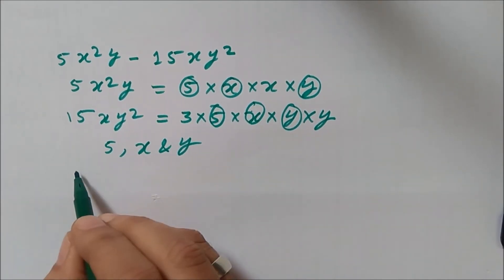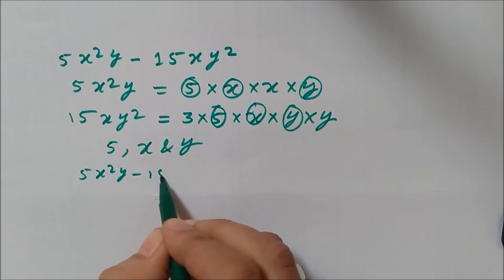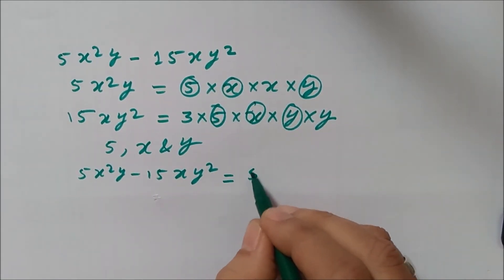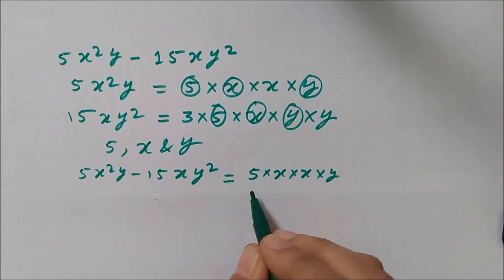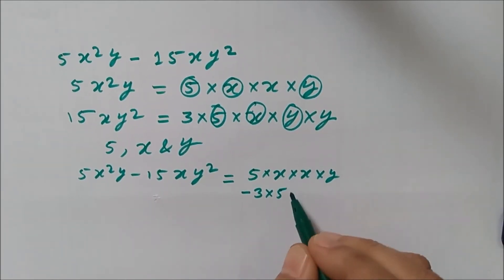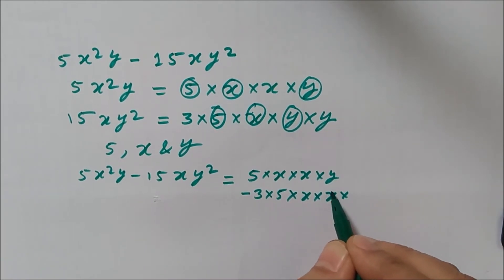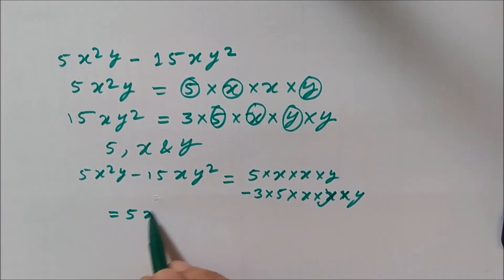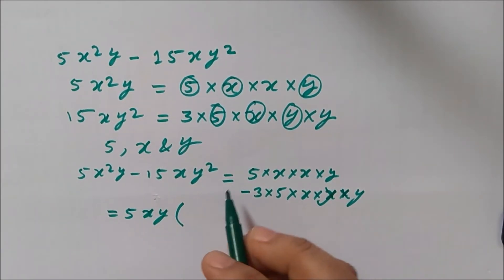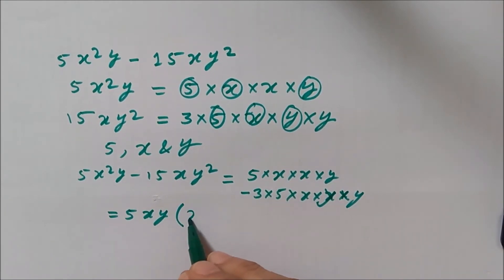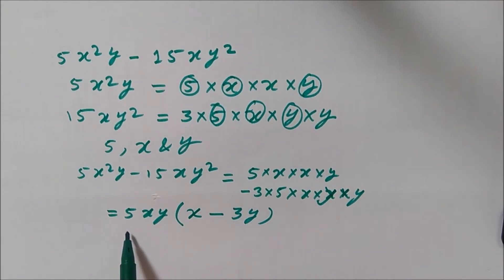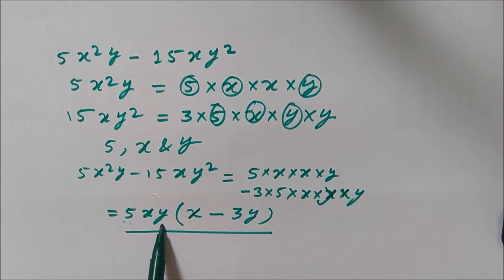So the full expression 5x squared y minus 15xy squared can be written as 5 into x into x into y minus 3 into 5 into x into y into y. Taking the common factor 5xy out, the resulting expression becomes 5xy into x minus 3y. So the factors are 5xy and x minus 3y. This is the method of taking common factors.